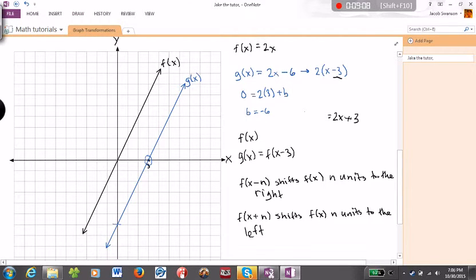So we have f(x) listed up here conveniently. So f(x) + 3 equals 2x + 3.